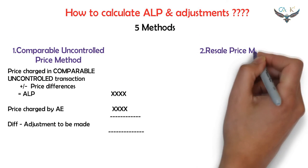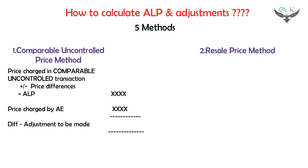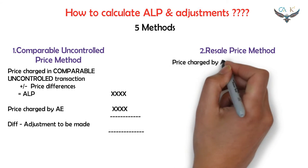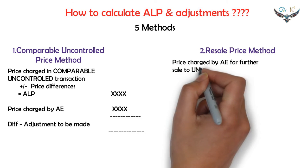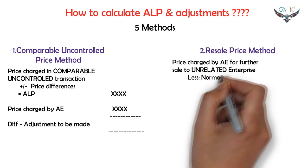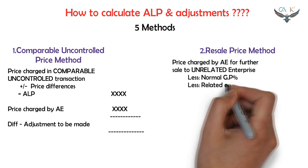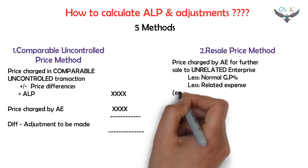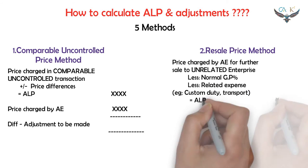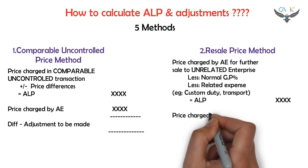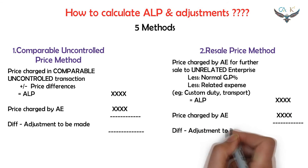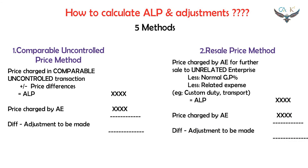The second method is the Resale Price Method. Firstly, take the price charged by the associated enterprise for its further sale to the unrelated enterprise. From that, deduct the normal gross profit margin and the customs duty, transport, and other related expenses to arrive at the arm's length price. From the arm's length price, deduct the actual transaction price to arrive at the adjustment amount.